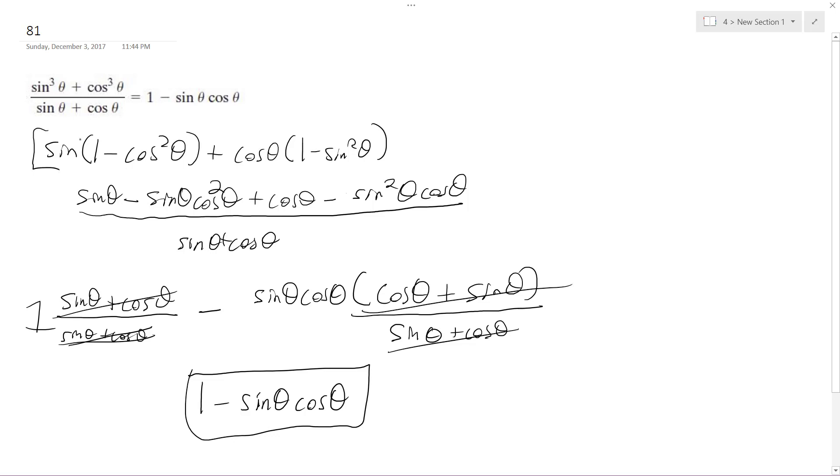I took out one of the factors, so in this case, I did sine theta times sine squared theta, and I converted sine squared theta to one minus cosine squared theta.